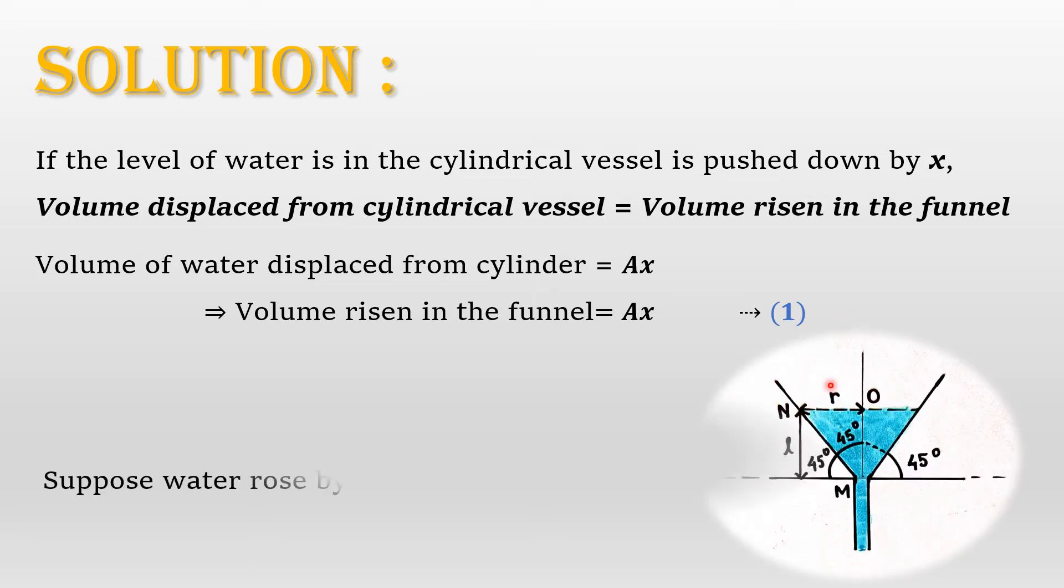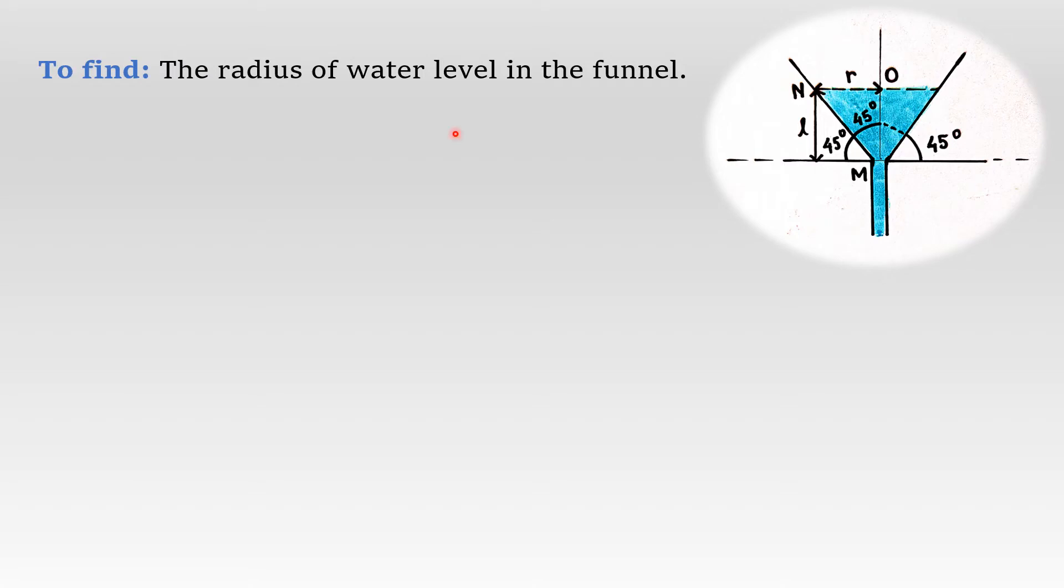Suppose water rose by l units in the funnel. We are required to find the radius of water level in the funnel. From the picture, it is evident that triangle MNO is isosceles, that is, it has at least two sides of equal length. Therefore, r equals OM which equals l.